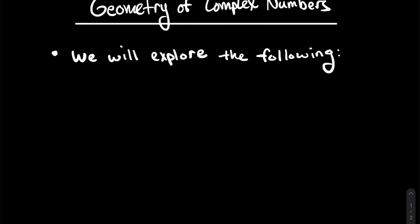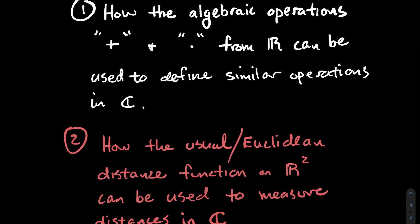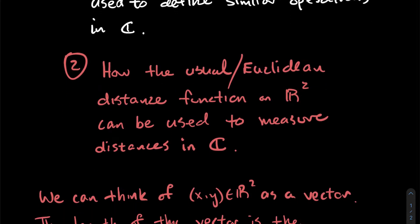In this video we're going to look at the geometry of the complex numbers. In the introductory video I posed two questions — two paths of study. The first one we explored was the algebraic operations on complex numbers: complex addition and complex multiplication. Now we're moving on to the second question: how the usual Euclidean distance function on R2 can be used to measure distances between two complex numbers.